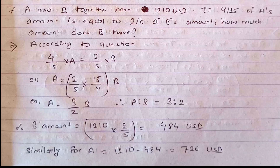Question 7: A and B together have $1210. If 4/15 part of A's amount equals 2/5 part of B's amount, how much amount does B have? So A and B together have $1210, and 4/15 part of A equals 2/5 part of B. The question asks us to calculate how much amount B has.